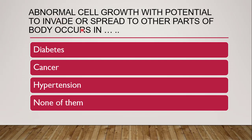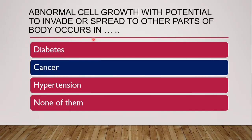Next question: abnormal cell growth with potential to invade or spread to other parts of the body occurs in which disease — diabetes, cancer, hypertension, or none? All are non-communicable diseases, but cancer is specifically defined by abnormal cell growth. So the correct answer is cancer — it is not the case in diabetes or hypertension.